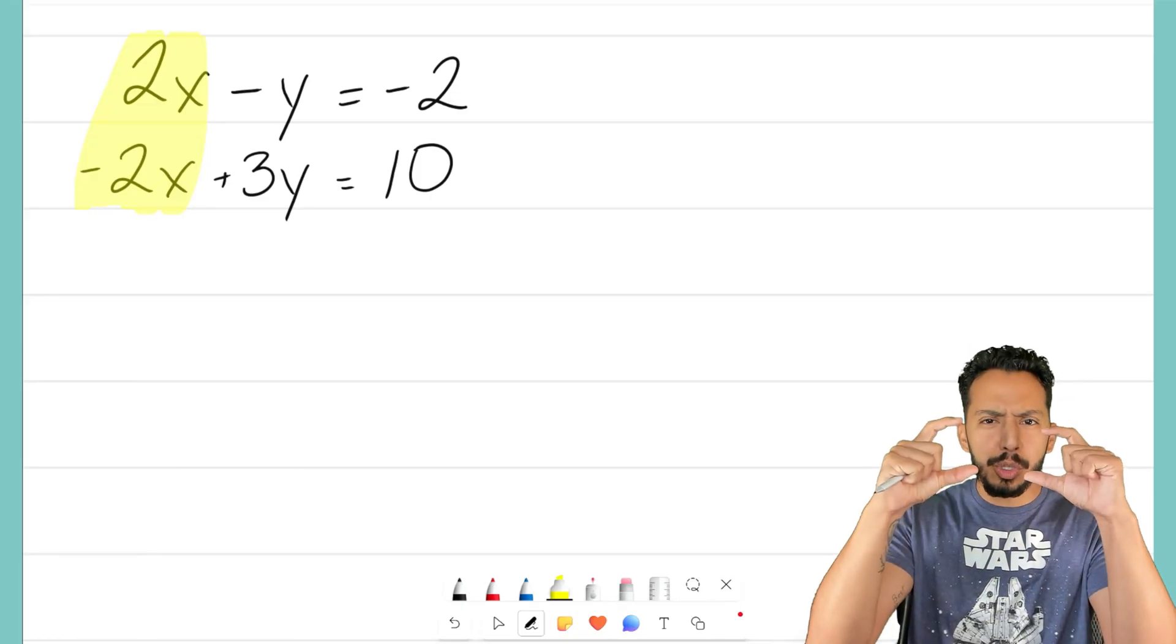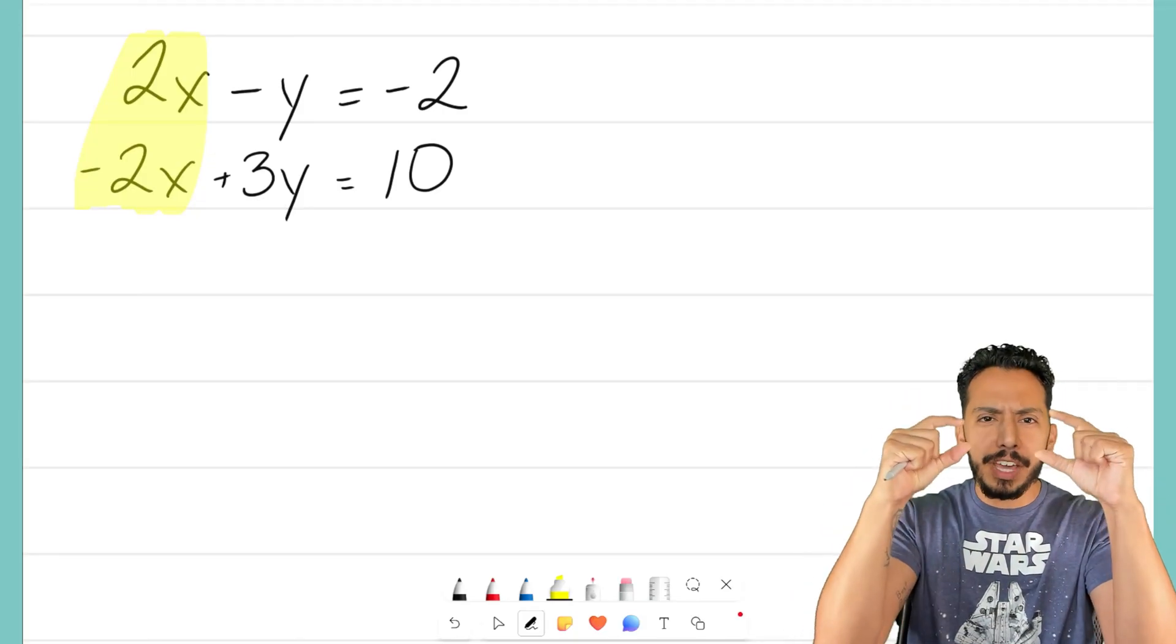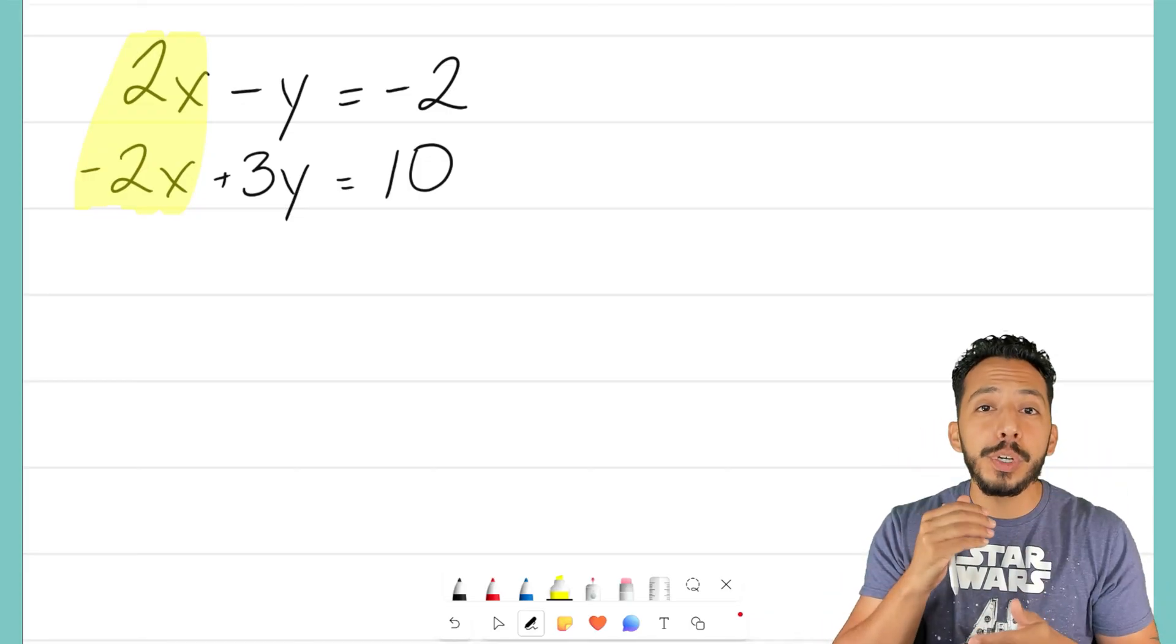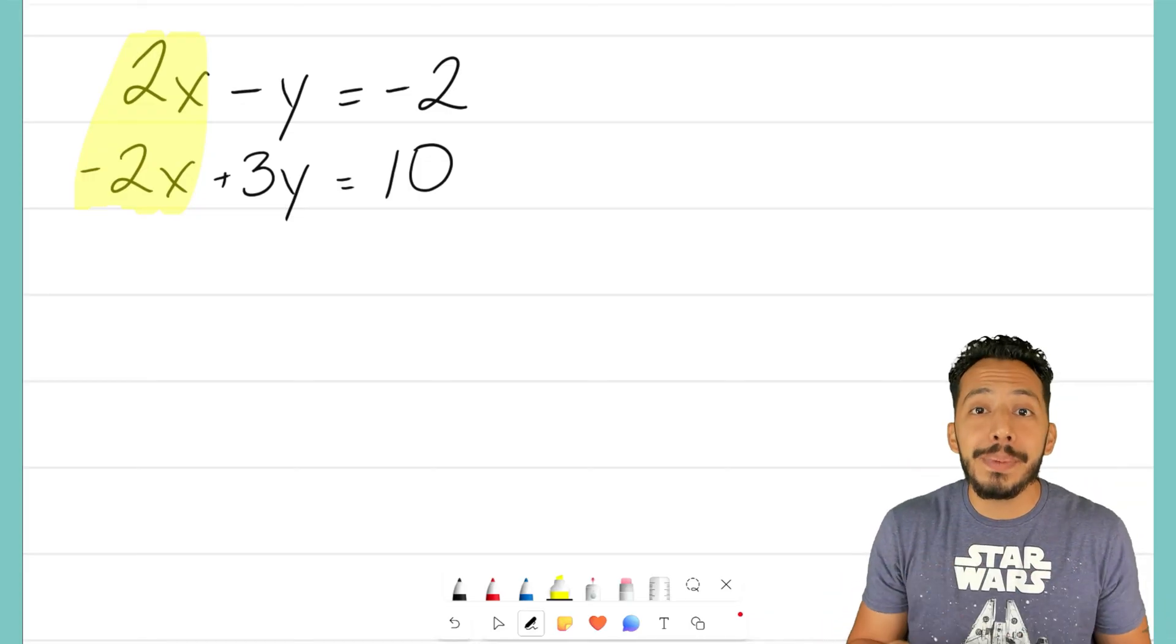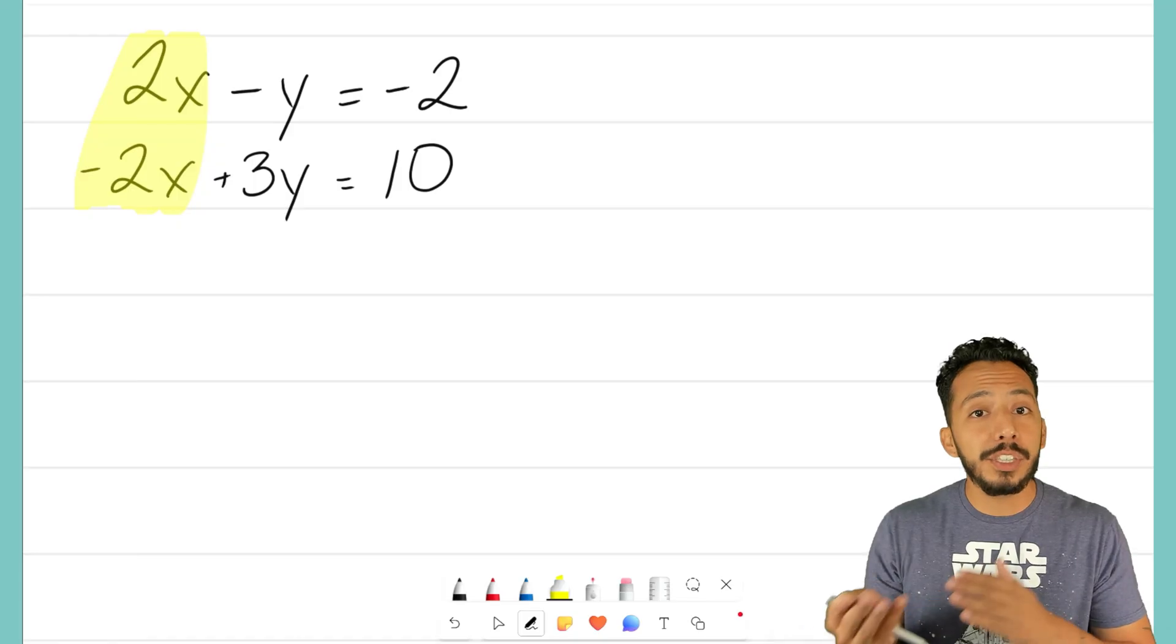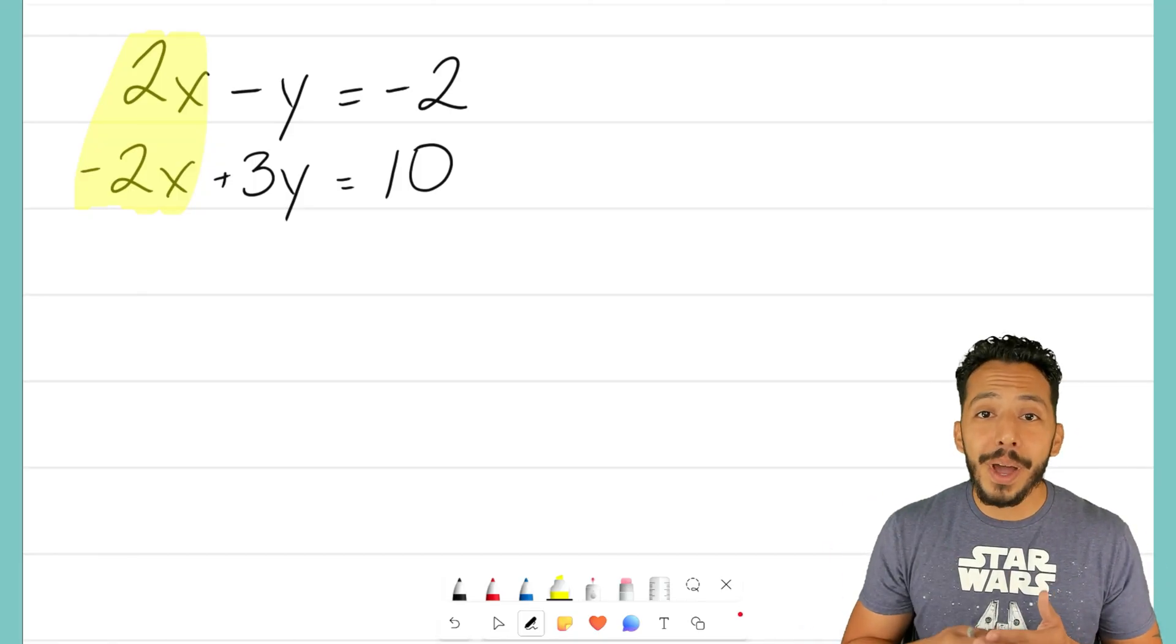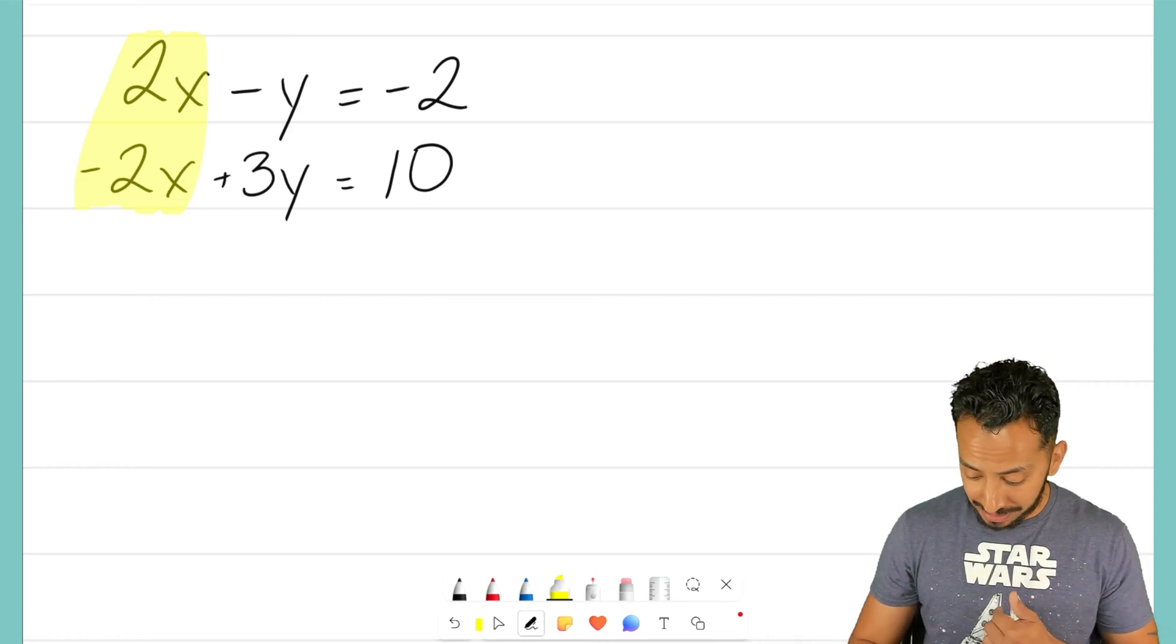If we think about taking those two equations and smushing them together, combining them to make one equation, those two variables would drop out. They would get eliminated, because one is positive 2, one is negative 2, a positive and a negative, those zero out. That's what we want for the elimination method.